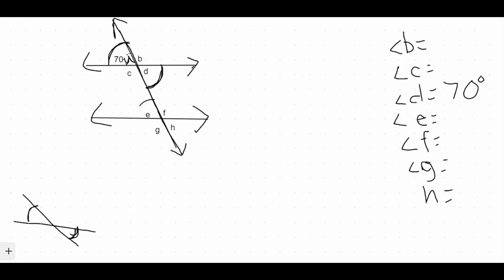So if angle A corresponds with angle E, that means those two would be the same. And since angle A is 70, angle E also has to be 70 degrees. Same thing for D, that bottom right angle there would match up with the bottom right angle of H. So D and H would also be corresponding angles. And since D is 70 degrees, H also has to be 70 degrees.